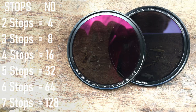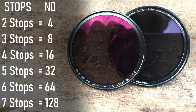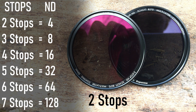Now let's talk stops and ND numbers. A 2-stop ND cuts very little light and is good for bright indoor shots or balancing indoor and outdoor exposure. Two stops equals ND4, and every stop you go up the ND number doubles — so 3 stops is ND8, 4 stops is ND16, and so on. There are different labeling variations online but these are the basic ones most NDs use. Looking at the filters side by side, the 2-stop is quite clear while the 3-stop is noticeably darker — use the darker one for brighter conditions.